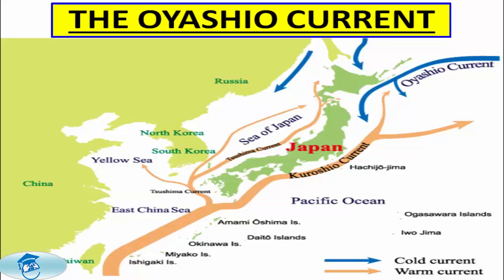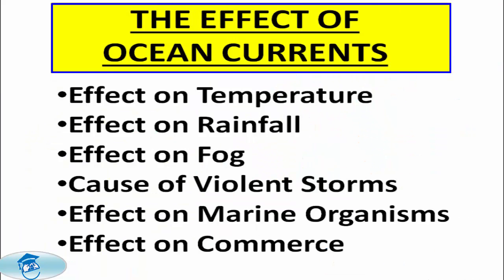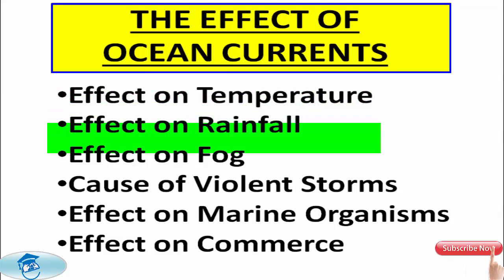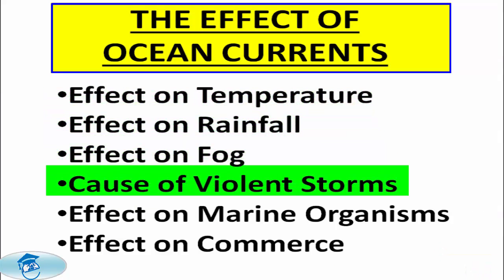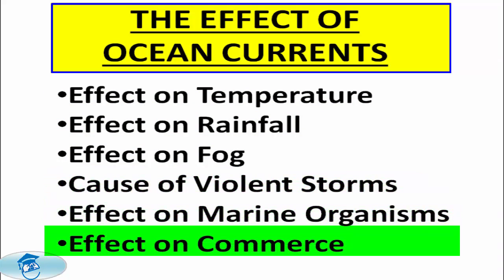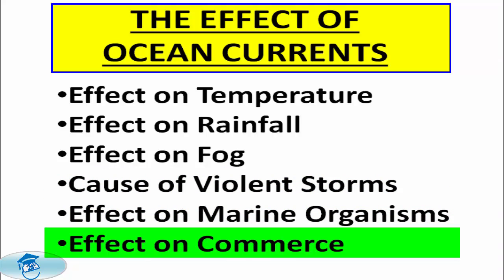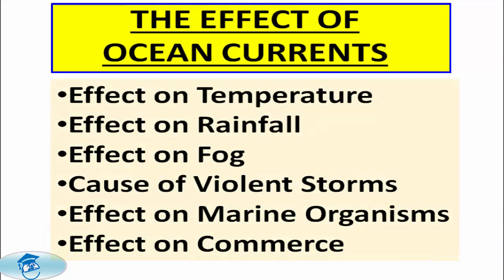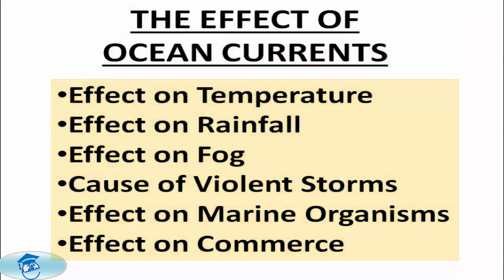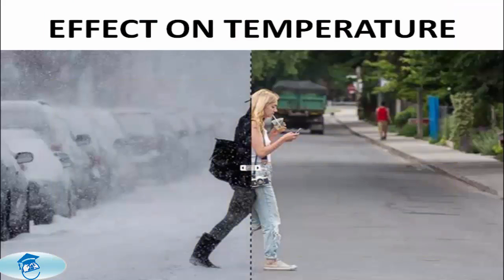We have now discussed many ocean currents. Let us discuss the effects they have, which are numerous: the effect on temperature, the effect on rainfall, the effect on fog, they are a cause of violent storms, the effect on marine organisms, and the effect on commerce.